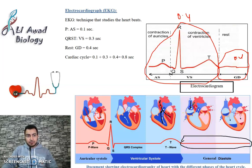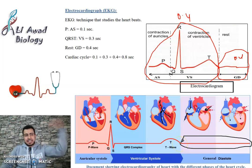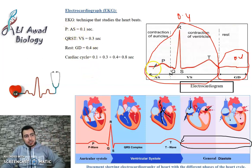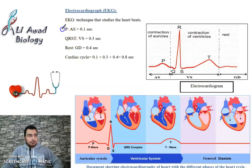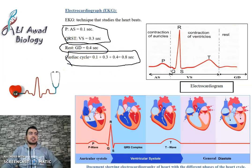The veins bring blood to the auricles, then it descends to the ventricles. Then the two auricles contract again — that is why we see the pattern repeated. Auricular systole: 0.1 second. QRST ventricular systole: 0.3 second. Together: 0.4 second. General diastole: 0.4 second. So PQRST equals the rest period — they are equal. The cardiac cycle takes 0.8 seconds total.